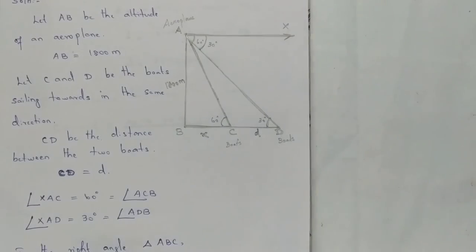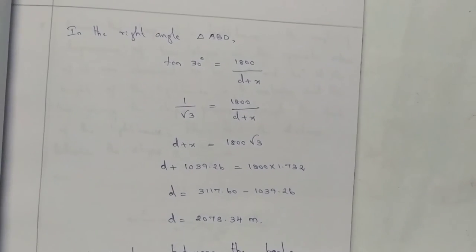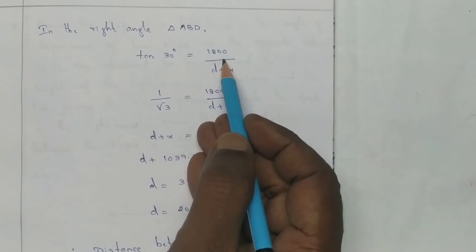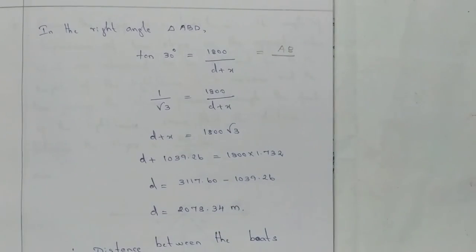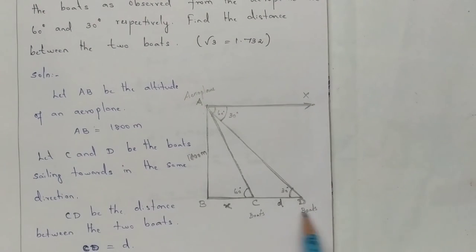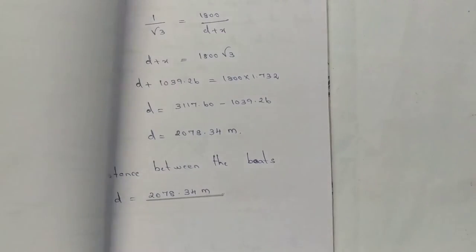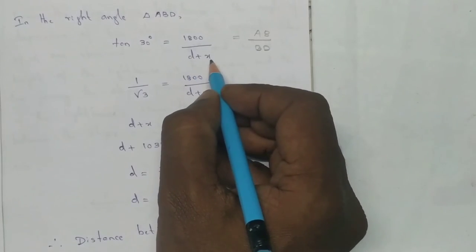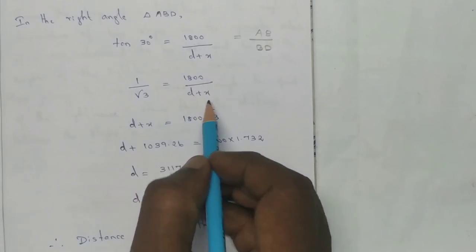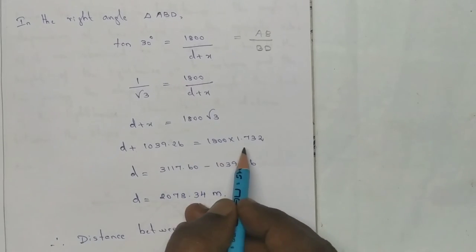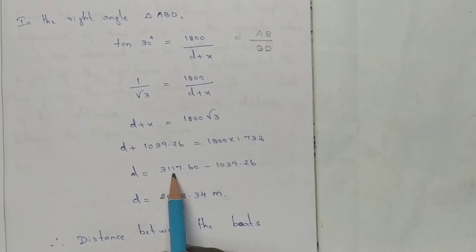Now in triangle ABD, tan 30° equals AB by BD. AB is 1800 and BD is BC plus CD, which is d plus x. So 1 by root 3 equals 1800 by d plus x. Cross multiplying, d plus x equals 1800 into root 3, which is 1800 into 1.732, giving 3117.60.